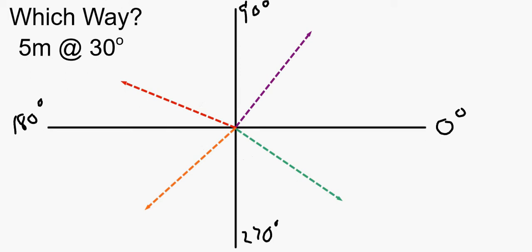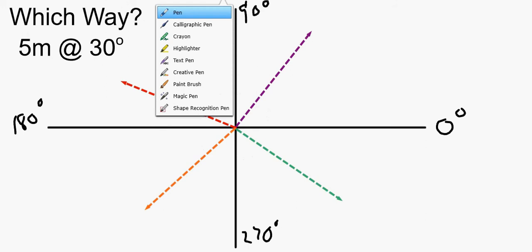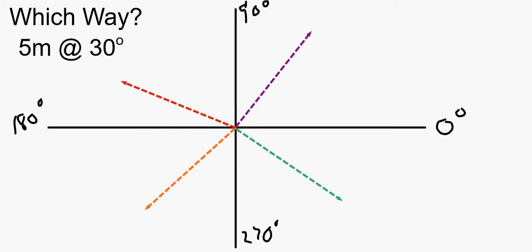...that we use in our class here at Milton Union is a standard north, south, east, west. We're just going to by definition say that this direction to the right is east, and we got north to the top, south down here, and west over here.